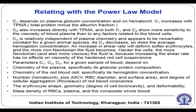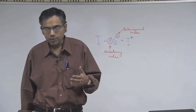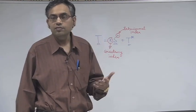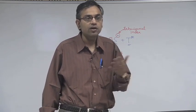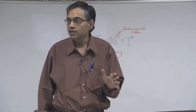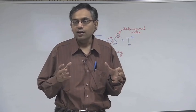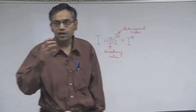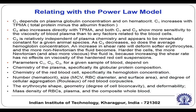Whether blood is a Newtonian or non-Newtonian fluid is not a straightforward question. It depends on many things, including the hardness of the red blood cells. If red blood cells are soft, they can be very easily deformed, and an increase in shear rate will make the fluid more non-Newtonian. However, if the red blood cells are hard, shear rate has no effect on the effective viscosity, so viscosity is constant and the blood behaves like a Newtonian fluid.